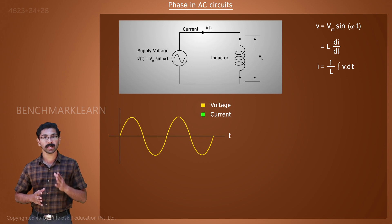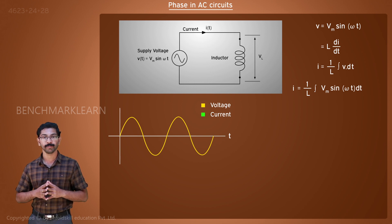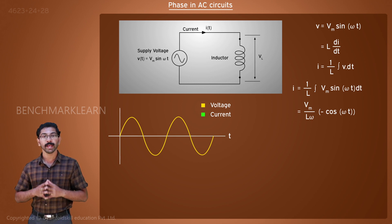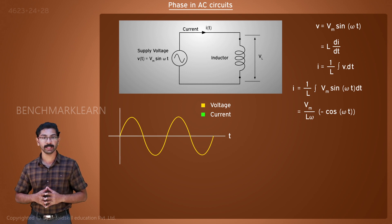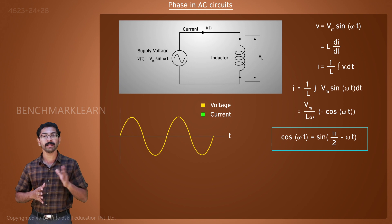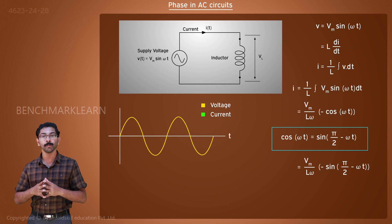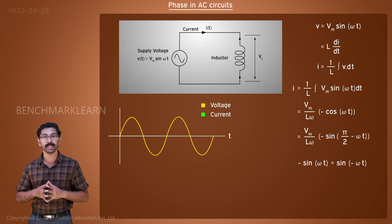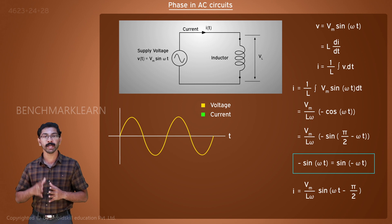For a sinusoidal voltage, current I is equal to 1 by L into integral Vm sin omega t dt, which is equal to Vm by L omega into negative cos omega t. A cosine waveform can be represented as a phase-shifted sine wave by the trigonometric identity: cos omega t is equal to sin of pi by 2 minus omega t. Then I is equal to Vm by L omega into negative sin of pi by 2 minus omega t. Since negative sin omega t is equal to sin of negative omega t, I is equal to Vm by L omega into sin of omega t minus pi by 2.